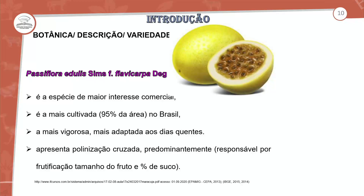A Passiflora edulis flavicarpa apresenta polinização cruzada predominante, sendo responsável pela frutificação e também pelo tamanho do fruto e porcentagem do suco. Temos que ficar muito atentos ao processo de polinização, pois o estigma ficará disponível e a polinização tem que ser cuidadosa, uma vez que na grande maioria o sucesso é advindo dos agentes polinizadores.